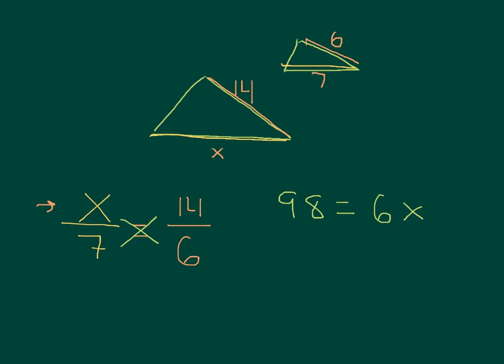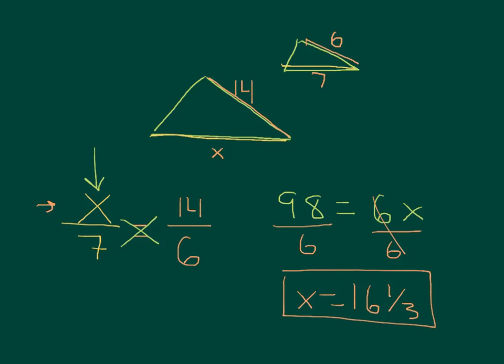And it's equal to 6 times X. So now divide both sides by 6, and X equals 16.3 repeating, which we can write as 16 and 1 third. And don't forget, you can check your answer. If you plug your answer back in here, when you divide, you should get 2 and 1 third on this side, and then 14 divided by 6 is also 2 and 1 third. So it checks.